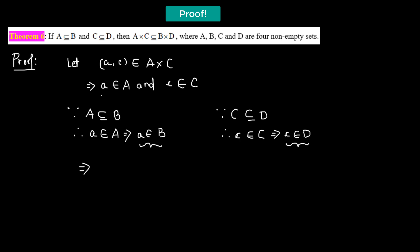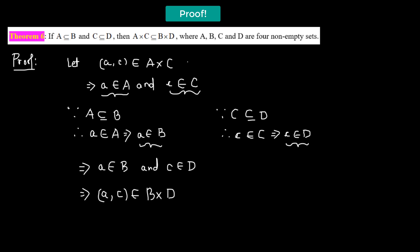Using these two statements, 'a belongs to A' is replaced by 'a belongs to B', and 'c belongs to C' can be written as 'c belongs to D'. This means the ordered pair (a, c) belongs to the Cartesian product of B and D. Since we started with (a, c) in A×C and concluded (a, c) in B×D, from statements one and two, the Cartesian product of A and C must be a subset of the Cartesian product of B and D. This is the end of the proof.